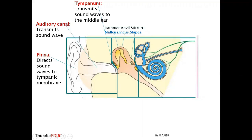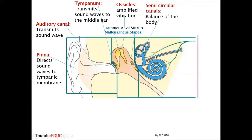The three ossicle bones are the malleus, incus, and stapes — abbreviated MIS. We don't advise using the common names like hammer, anvil, and stirrup in the exam; we prefer malleus, incus, and stapes. These bones amplify the vibration and also transmit the vibration to the oval window.